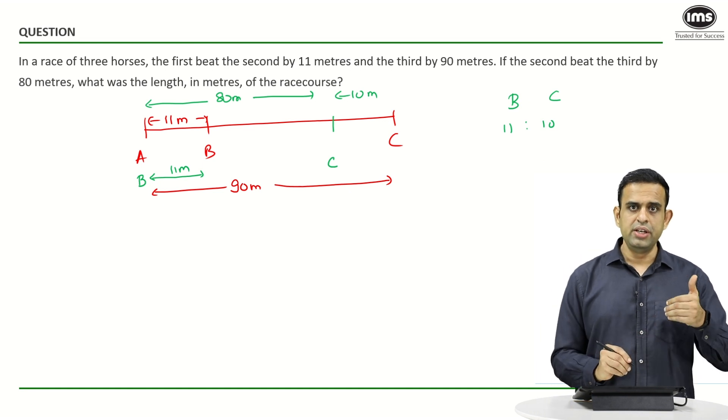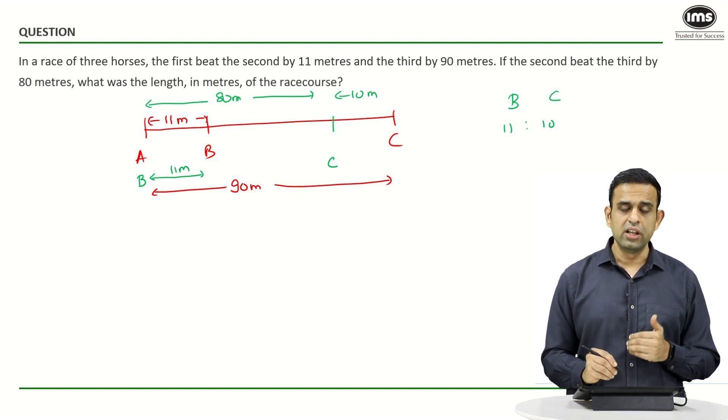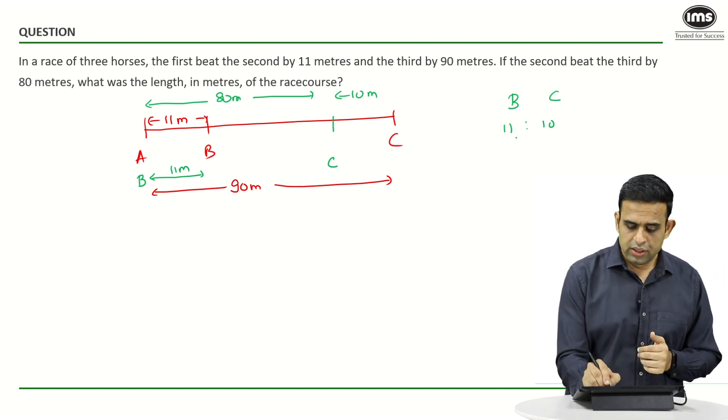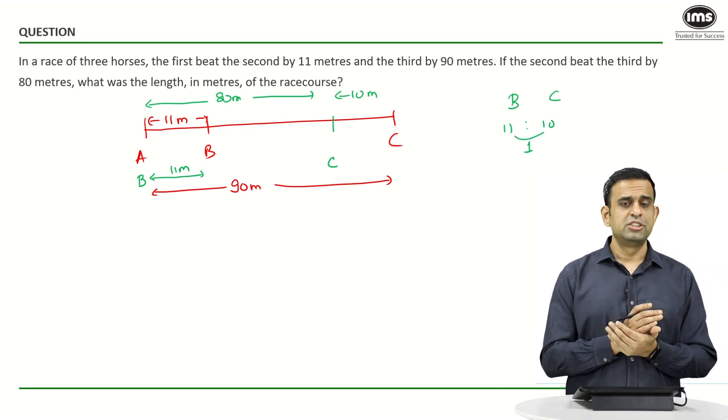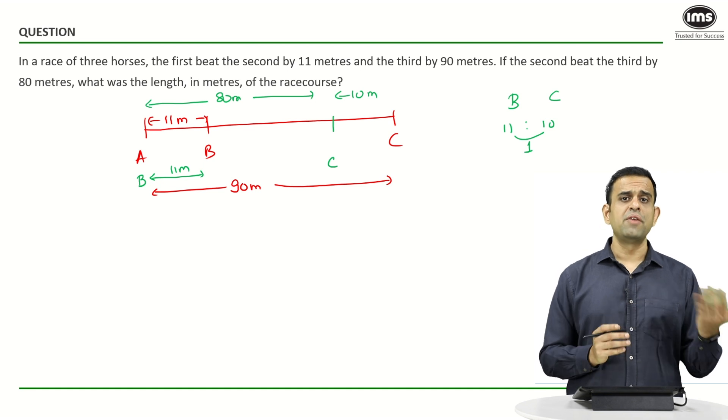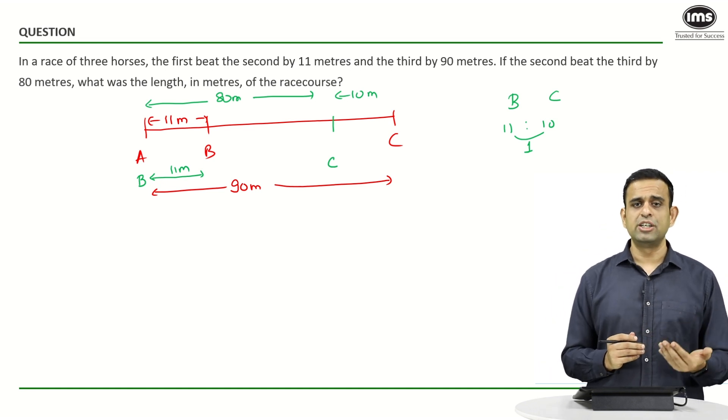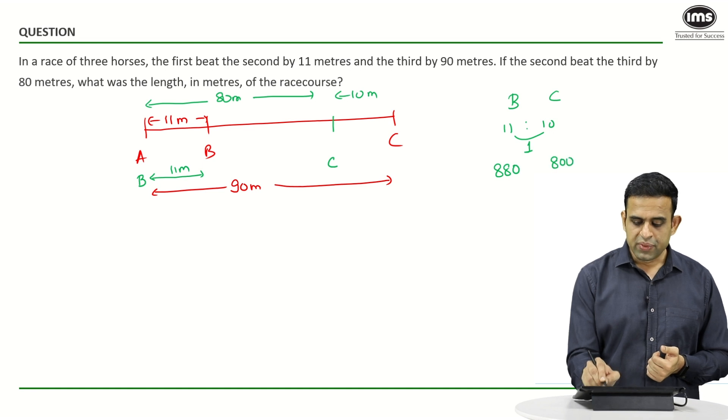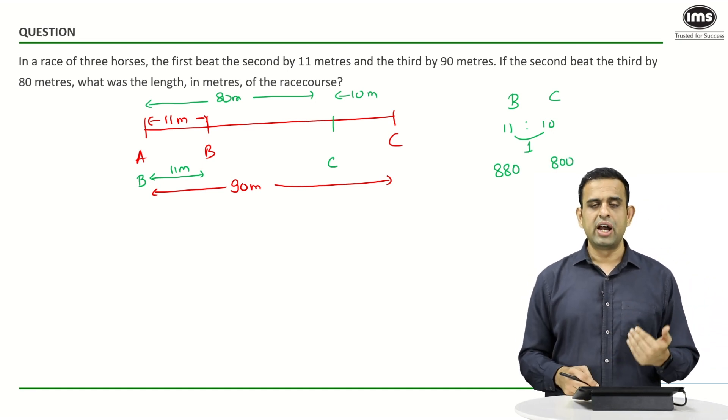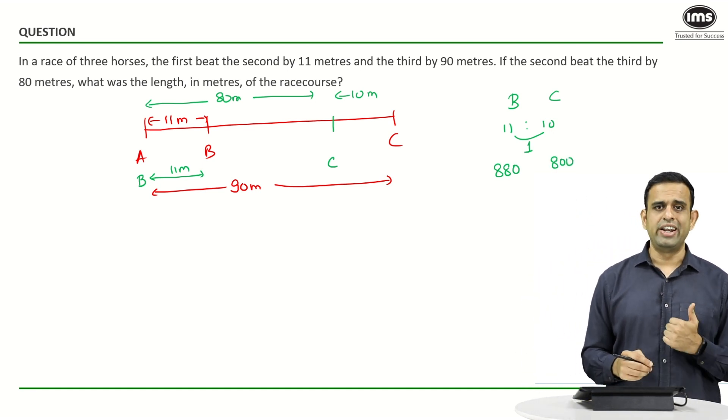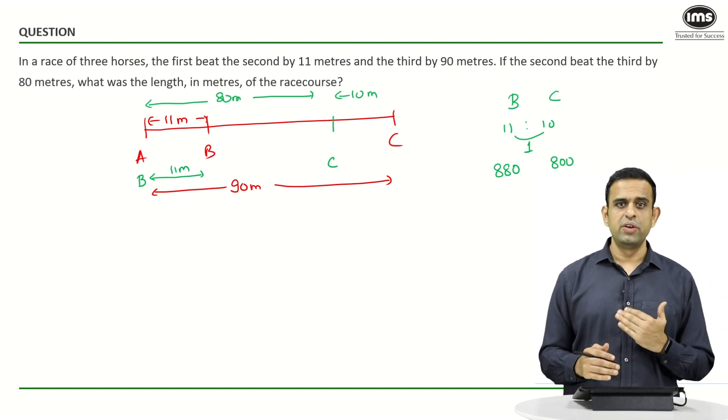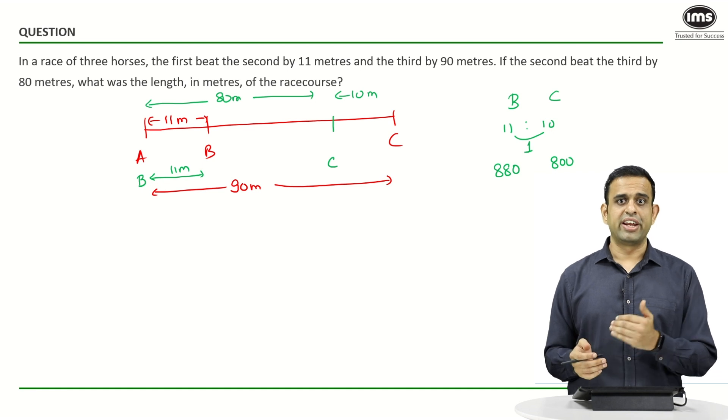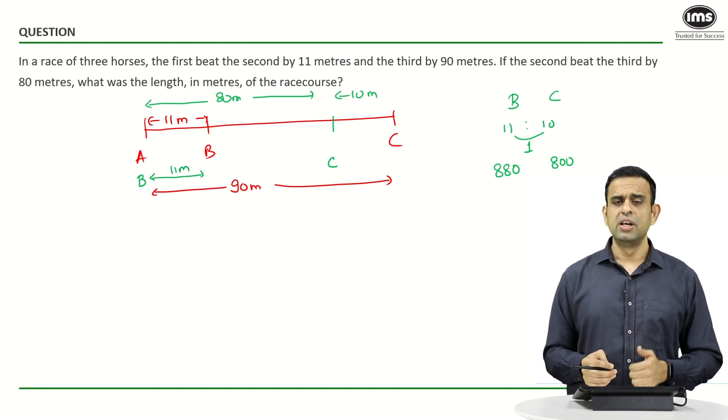Now what about the winning margin? When B covers 11, C covers 10. If the distance is 11 meters, the winning margin must be 1 meter. But we want the winning margin to be 80 meters. If you multiply the ratio by 80, you get 880 and 800, and B has defeated C by 80 meters. This way you don't need to take any variable into account.